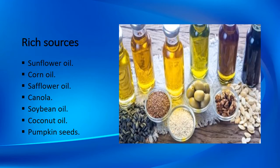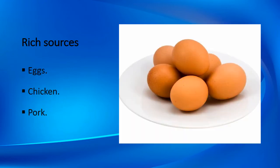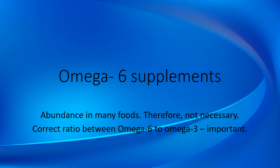Rich plant sources of omega-6 fatty acids include sunflower oil, corn oil, safflower oil, canola oil, soybean oil, borage oil, coconut oil, and pumpkin seeds. Rich animal sources include eggs, chicken, and pork. Since omega-6 is present in many foods, there is generally no need to add omega-6 fatty acid supplements to your dog's diet. However, the correct ratio between omega-6 and omega-3 is highly important.